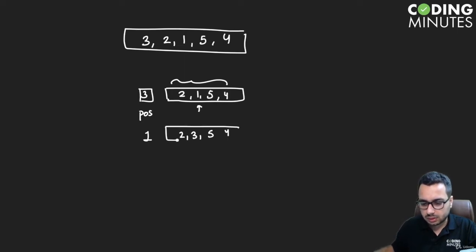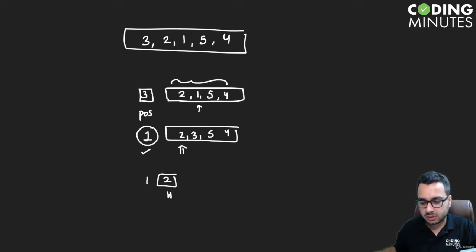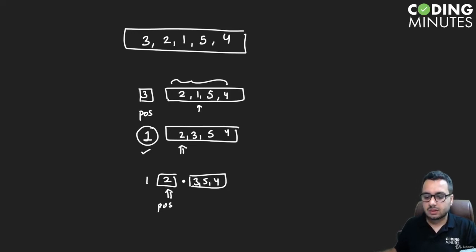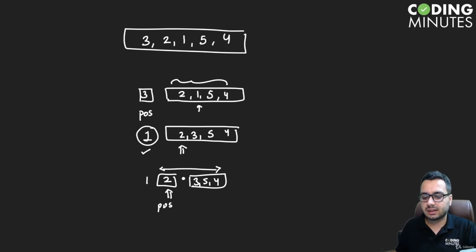Now we know this element is in the right position and we move to the next position. We have one, two — and the rest of the array three, five, four is unsorted. We check the minimum element in the rest of the array including the current element two, and two is the minimum, so it's already in the right position and we don't do anything.